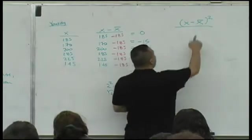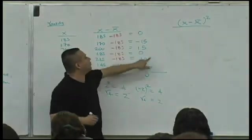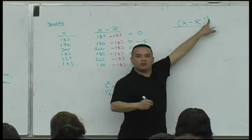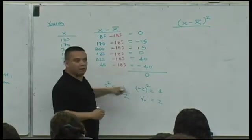So for every one of those values they got here, what are we going to do with them? Square them to make them what? Positive. See what I'm saying?